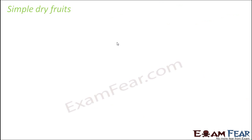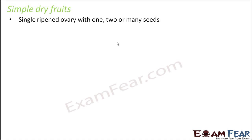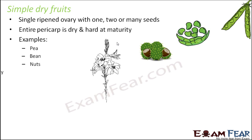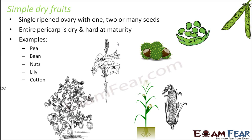Simple dry fruits are also a single ripened ovary with one or more seeds, but the entire pericarp is dry and hard at maturity. Examples include pea, beans, nuts, lily, cotton, and maize. In nuts, the pericarp is not fleshy but dry and hard, similar to beans and peas which are also quite hard.